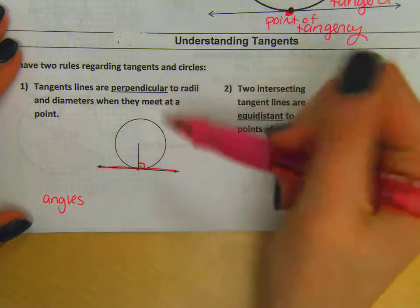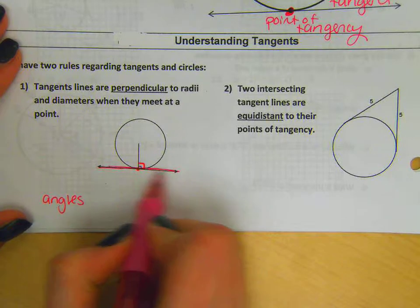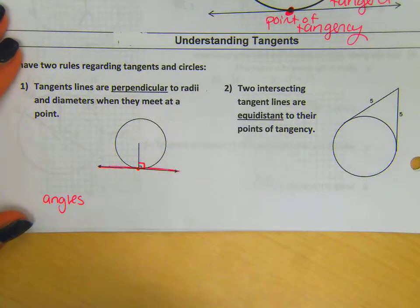So in this picture here, I have a radius that hits the edge of the circle exactly where the tangent line hits as well. Those two are always going to be perpendicular. That angle measure is always going to be 90 degrees.